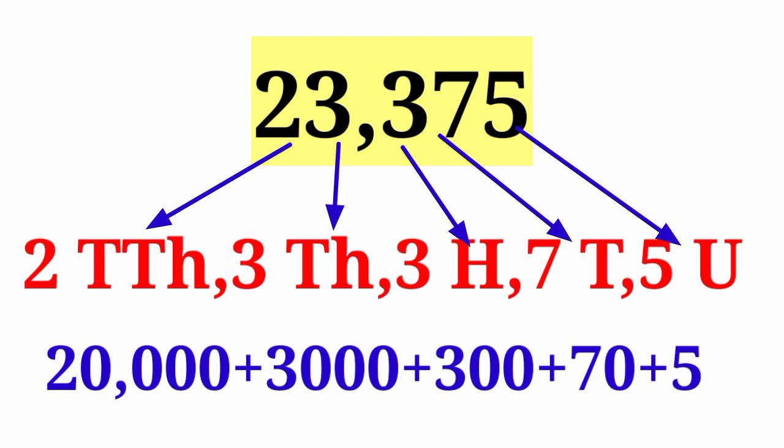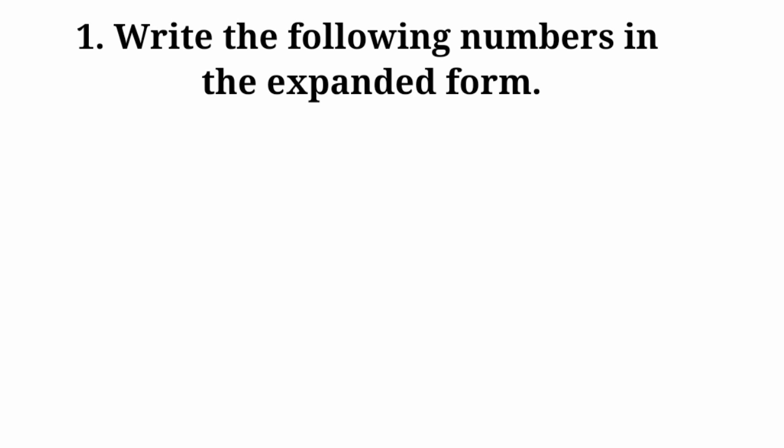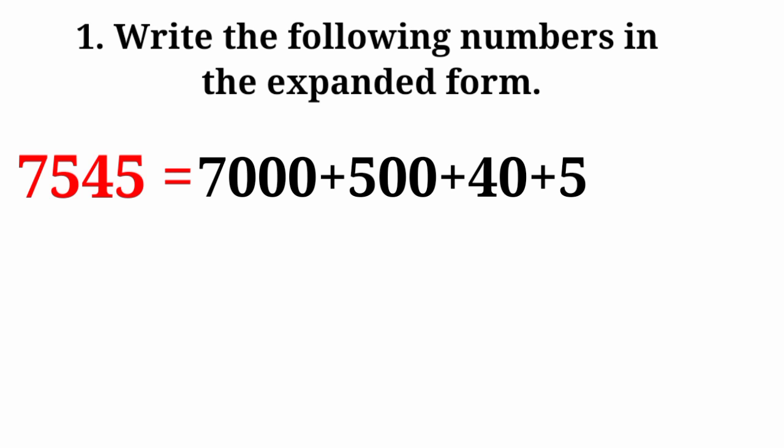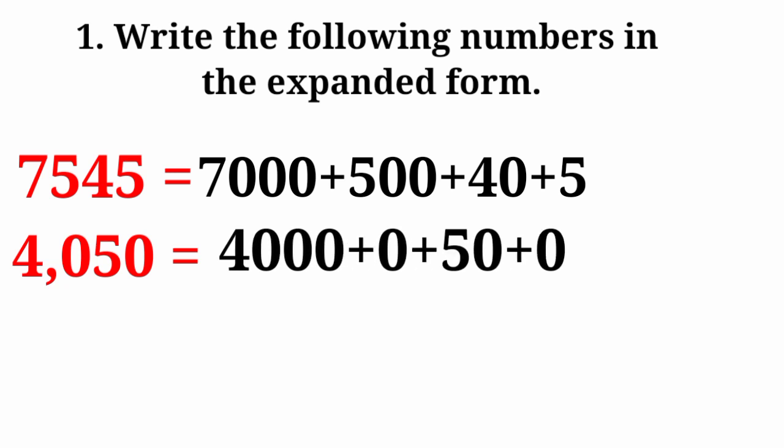Next examples: 467 equals 400 plus 60 plus 7. Next number 545 equals 500 plus 40 plus 5. Next number 4,050, expanded form: 4,000 plus 0 plus 50 plus 0.